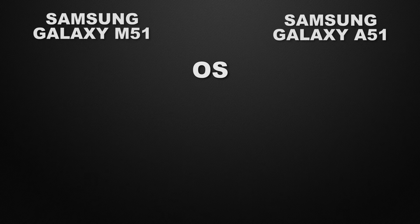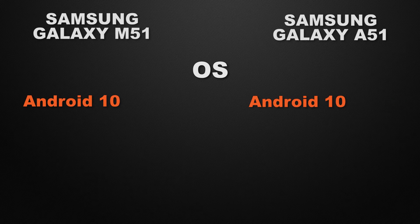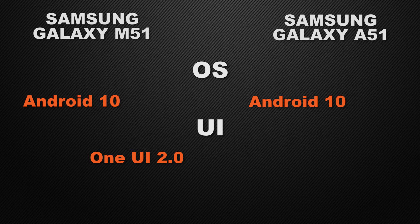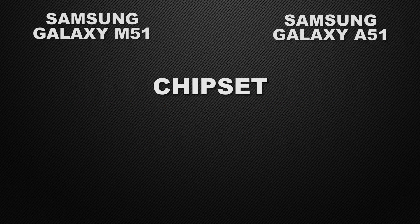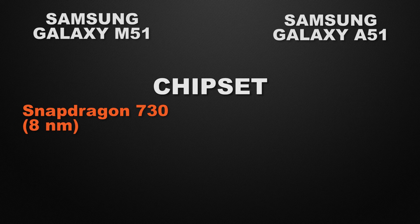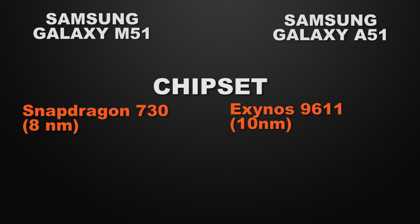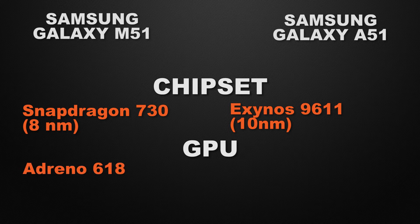Moving to performance, let's start with the operating system. Both devices run Android 10, so it's a tie. For user interface, the M51 has One UI 2.0 and the A51 has One UI 2.1 — I'll call it a tie since it's personal preference. For the processor, the M51 has Snapdragon 730 and the A51 has Exynos 9611, so A51 is the winner. For the GPU, the M51 has Adreno 618 and the A51 has Mali G71 MP3, so the winner is A51.